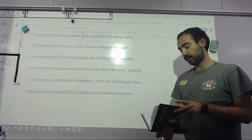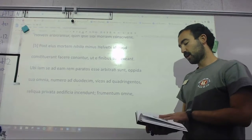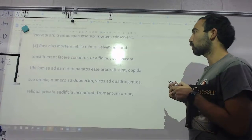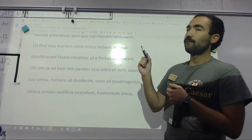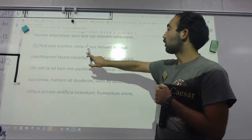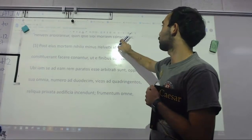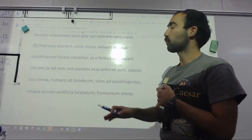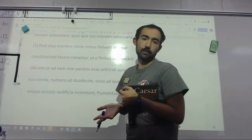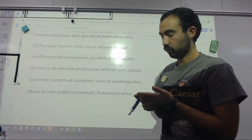Salvete omnes. Hello everybody. I'm going to be going over Book 1, Chapter 5 of Caesar here. This is shortly after Orgetorix has died. He just found out quen ipse sibi mortem consequere. He just killed himself, literally just committed suicide, right after his trial.